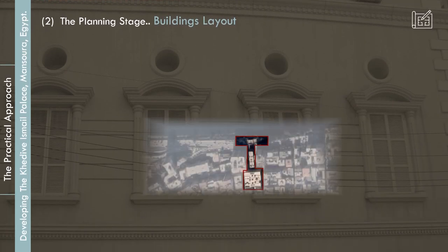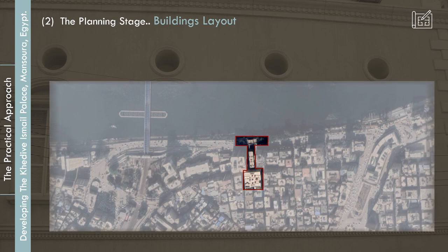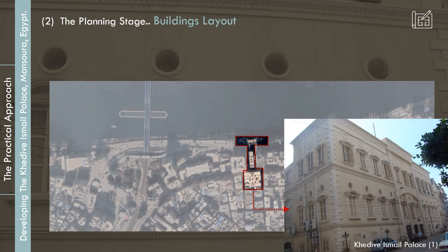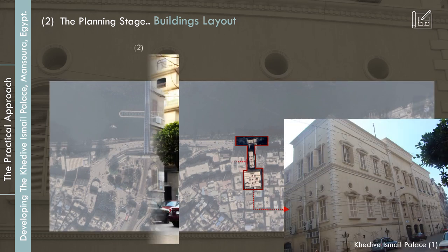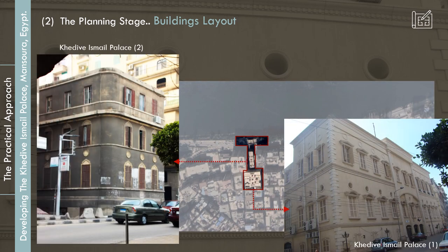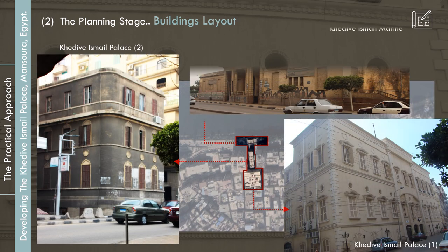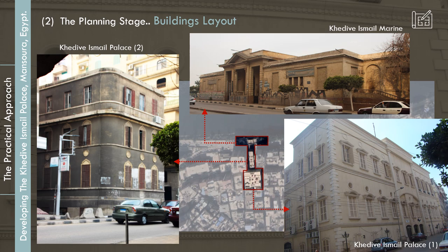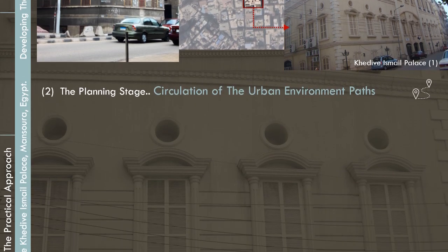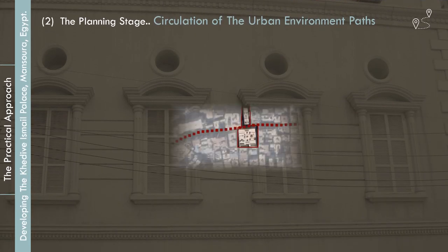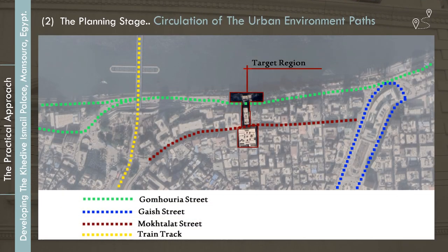The building and its accessories consist of three buildings: Khadiva Ismail Palace 1, Khadiva Ismail Palace 2, and Khadiva Ismail Marine. The main paths that surround the Khadiva Ismail Palace are Gamaria Street, Gayesh Street, Mukhtelat Street, and a train track.